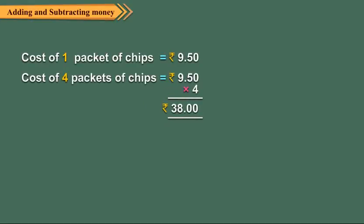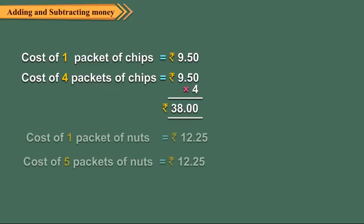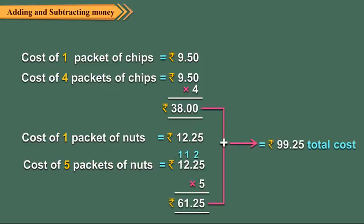Find the total cost of four packets of chips at rupees 9.50 per packet and five packets of nuts at rupees 12.25 per packet. So children, always remember that if you know the price of one item, you can use multiplication to find out the price of several similar items.